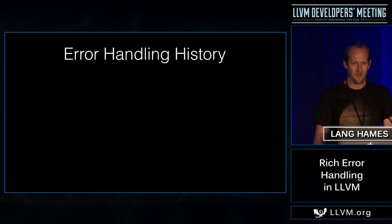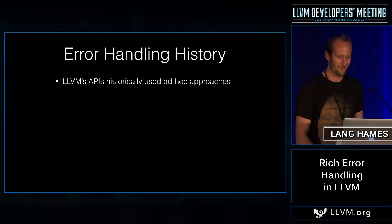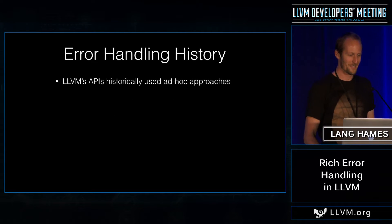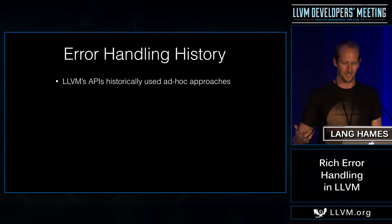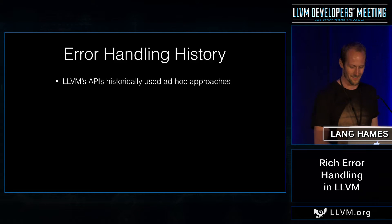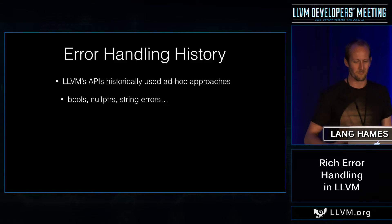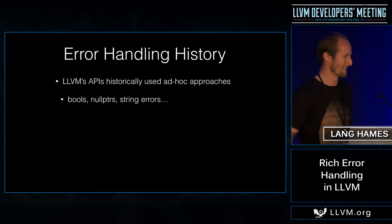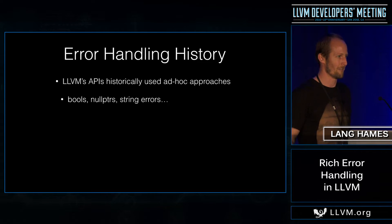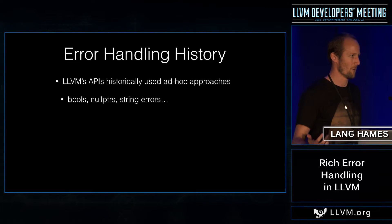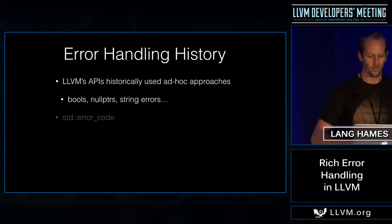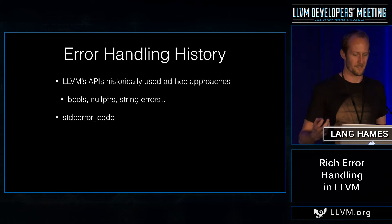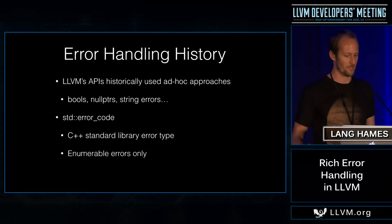So, LLVM error handling history. We have historically used ad hoc approaches to handling recoverable errors. We've used Boolean results, null pointers, and string errors to describe places in our environment where things have gone wrong — malformed input and the like. And our go-to is std::error_code, which is the C++ standard library error type.